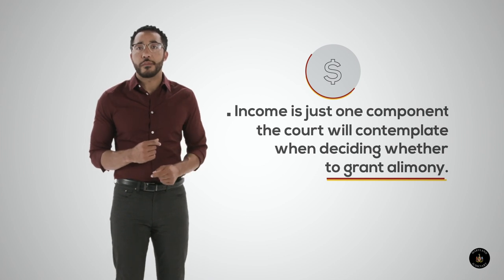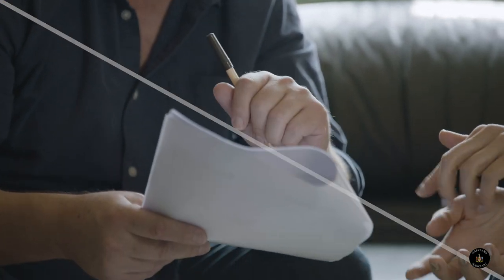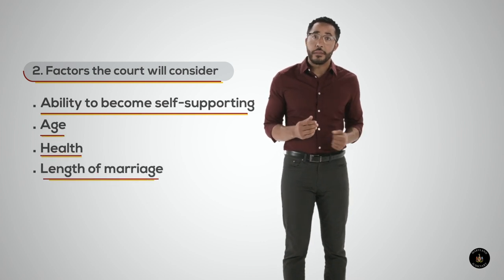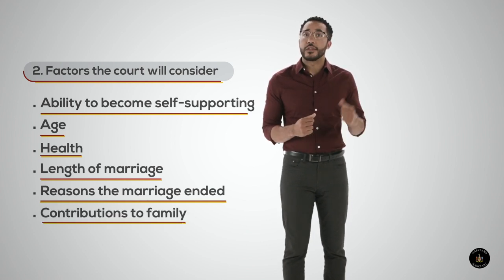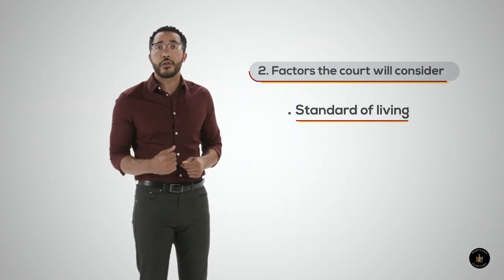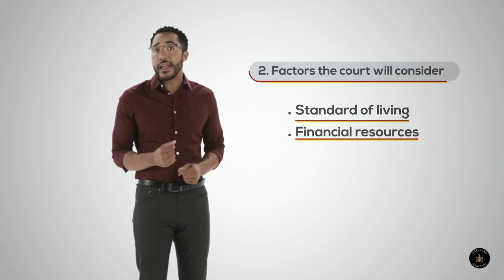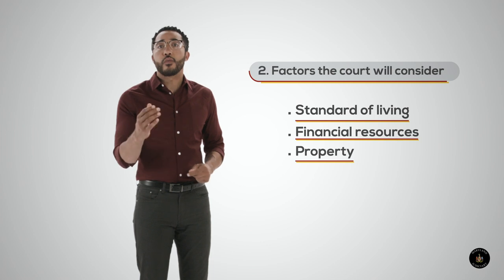Income is just one component the court will contemplate when deciding whether to grant alimony — there are several other factors. The court will consider the ability of the spouse seeking alimony to be self-supporting and the time they may need to become self-supporting. It will also consider the age and health of each spouse, the length of the marriage, and the reasons the marriage ended. The court will look at each spouse's contributions to the family, including monetary and non-monetary contributions. It will consider the standard of living during the marriage and the financial resources of each spouse, which may include financial needs, income, and assets. Finally, the court will take into consideration how marital property will be divided and the right of each spouse to retirement benefits.